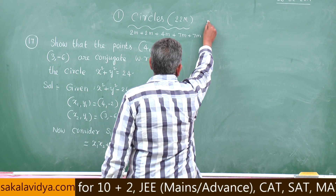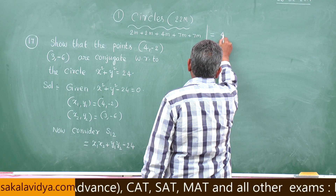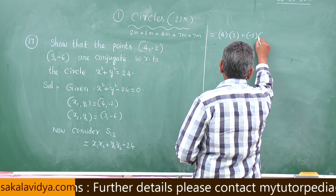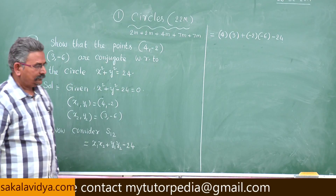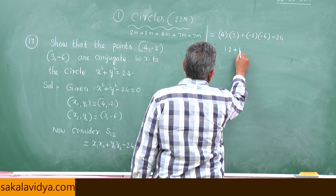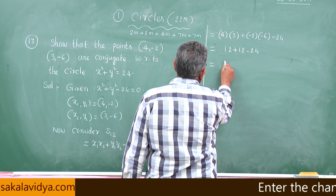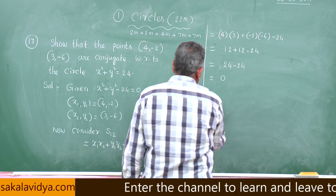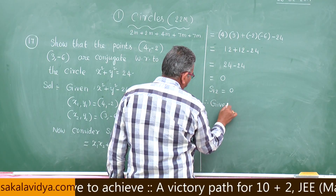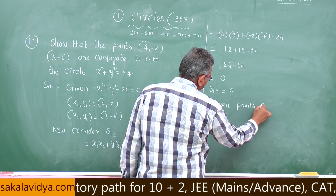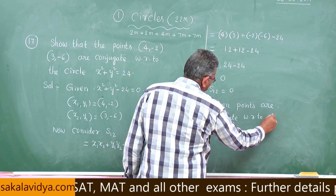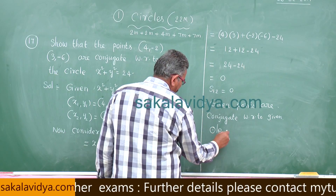s₁₂ means x₁x₂ + y₁y₂ - 24. Substituting: 4 into 3 plus (-2) into (-6) minus 24, we get 12 + 12 - 24 = 24 - 24 = 0. Since s₁₂ = 0, the given points are conjugate with respect to the given circle.